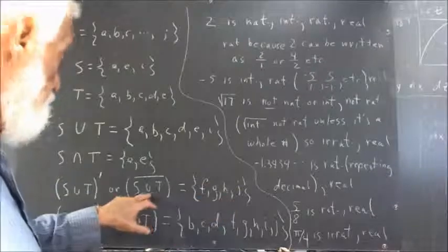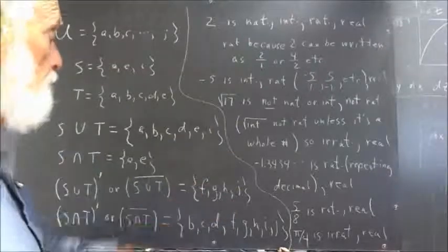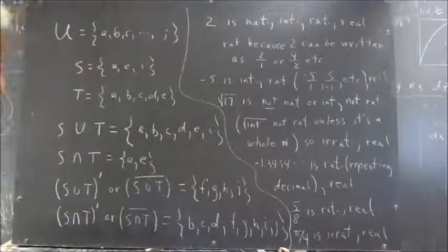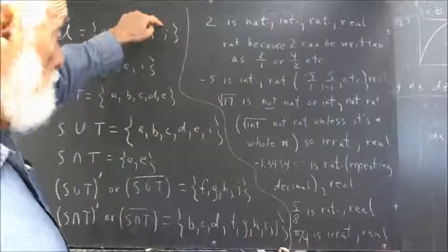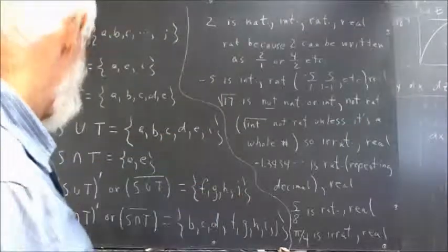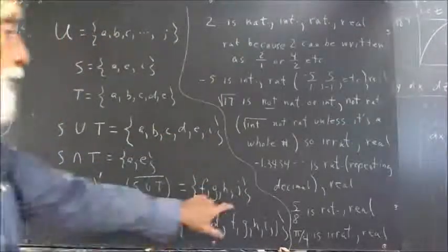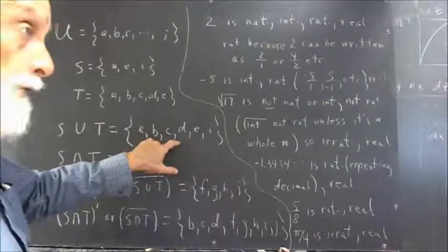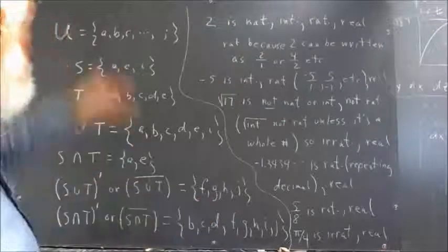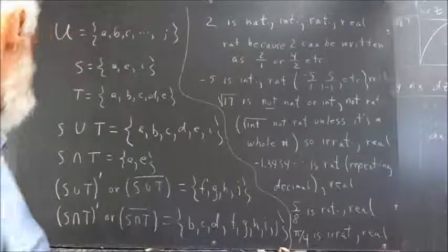H will be in the complement because it's not here. I is here, so it's not going to be in the complement. And the only remaining element of the universal set is J. It's not here, so it appears in the complement. If you put these two sets together, you get the universal set.